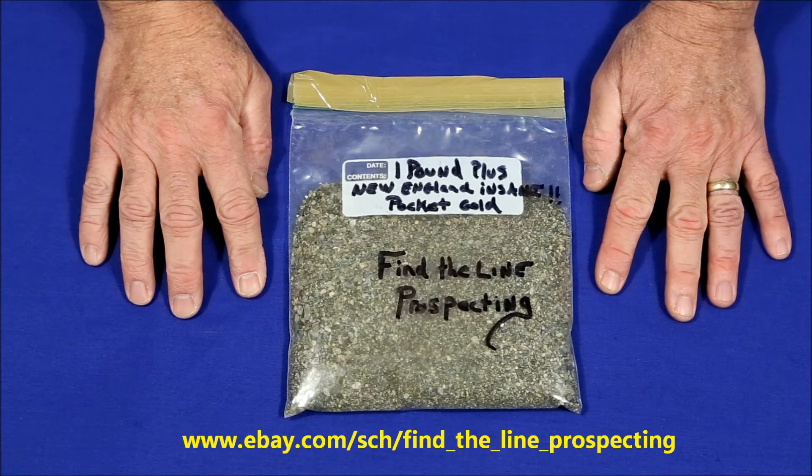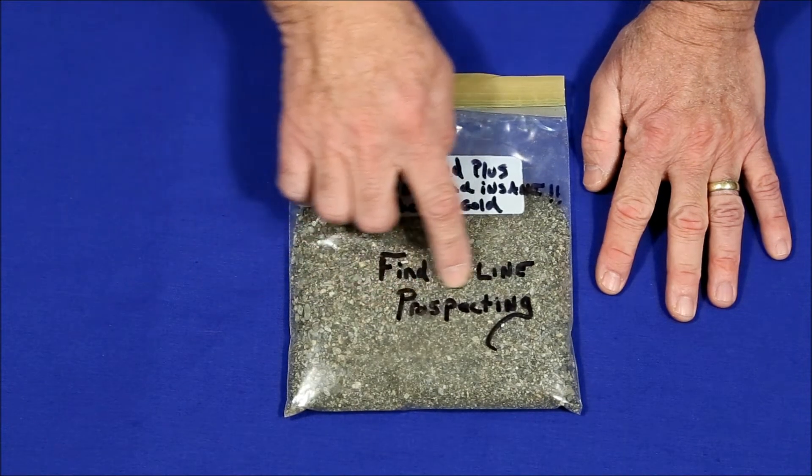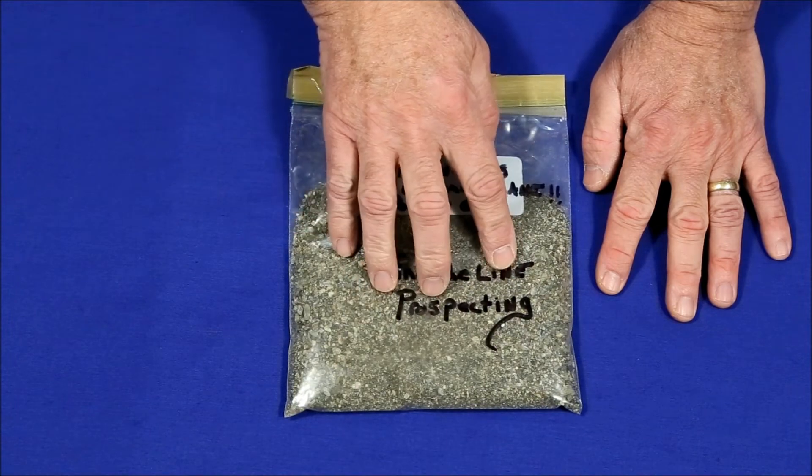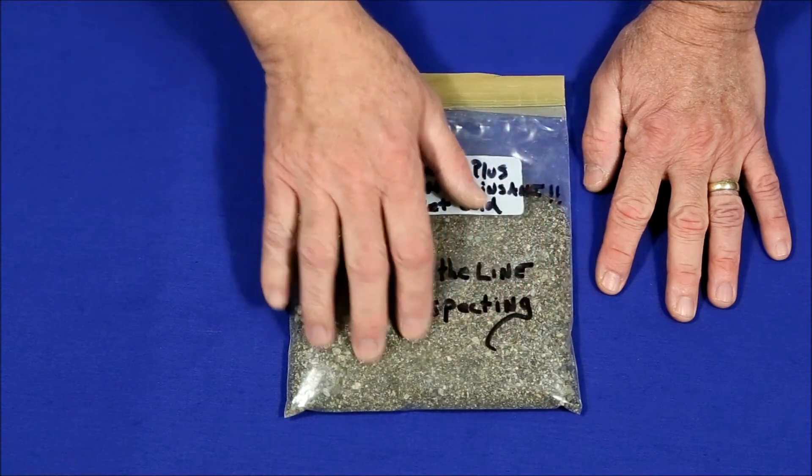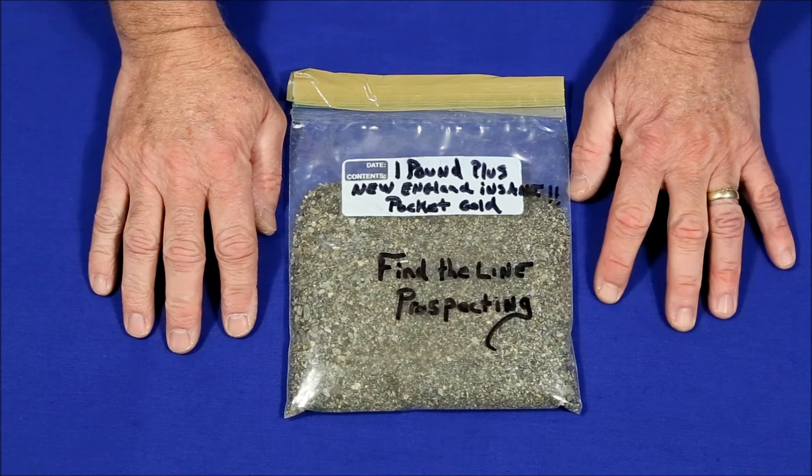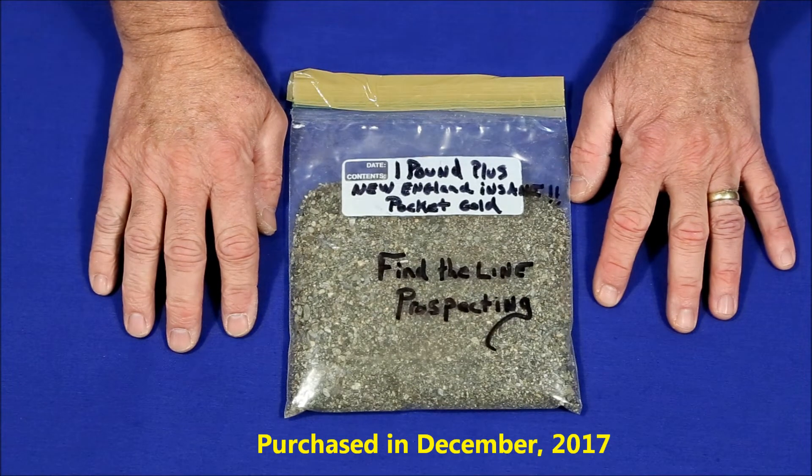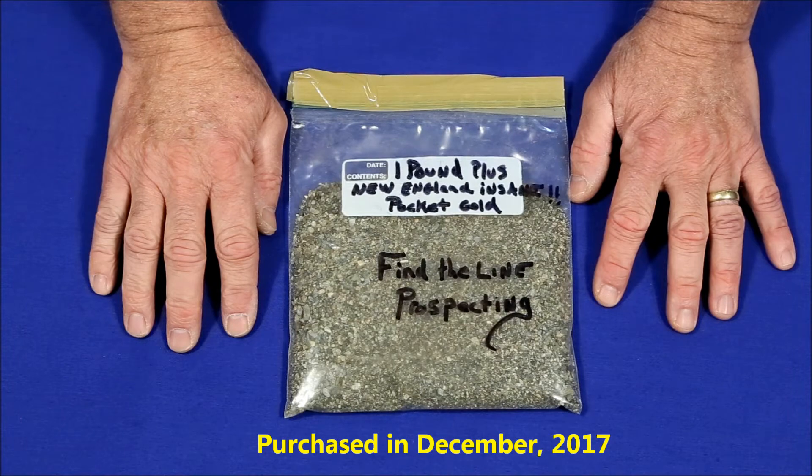This time it's a one-pound bag of what looks like concentrates more than paydirt because there doesn't seem to be a whole lot of silt in it. This was $55 and $7 shipping, so $62 total.